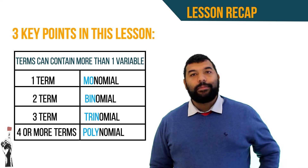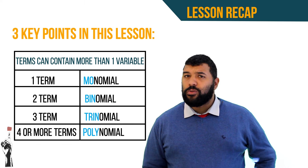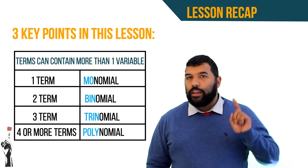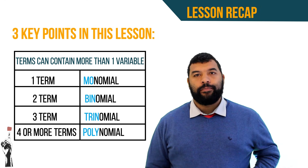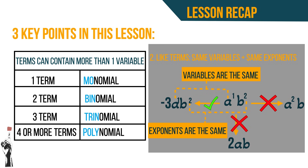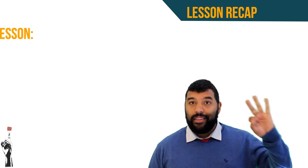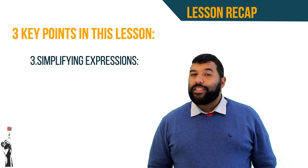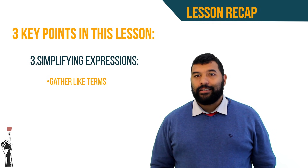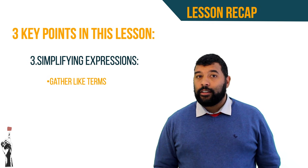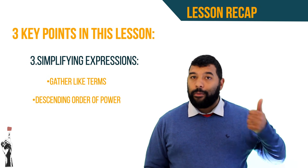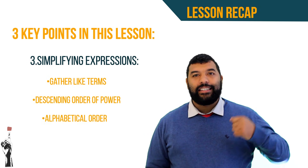To recap the lesson, three points: One, terms can contain more than one variable — two, three, four or more — each representing its own value. Two, like terms contain the same variable and the same exponent; if they are like terms we can gather and simplify them by adding or subtracting. Three, we simplify expressions by gathering like terms and placing the final answer in descending order of power, also in alphabetical order.